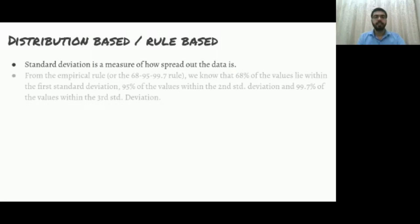From the empirical rule or the 68-95-99.7 rule, we know that 68 percent of the values lie within the first standard deviation, 95 percent of the values within the second standard deviation, and 99.7 percent of the values within the third standard deviation. This holds true for a normal distribution or Gaussian distribution.